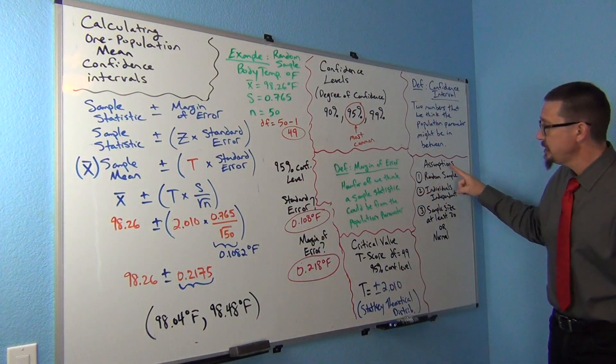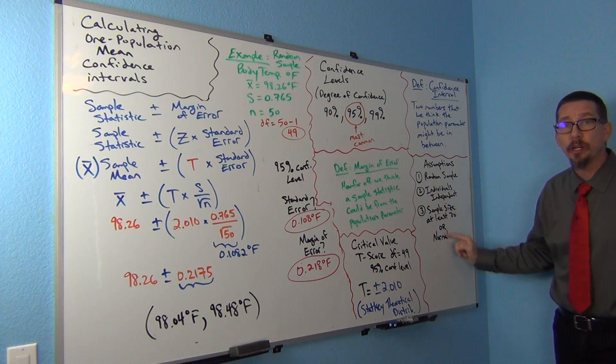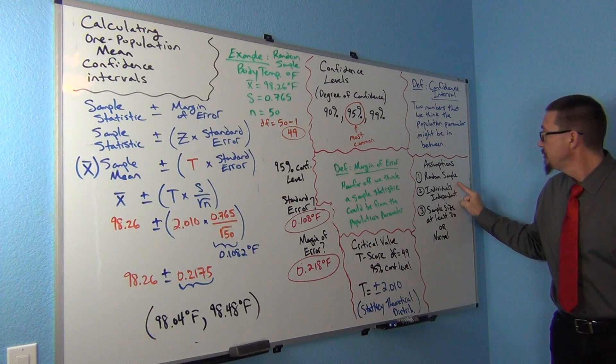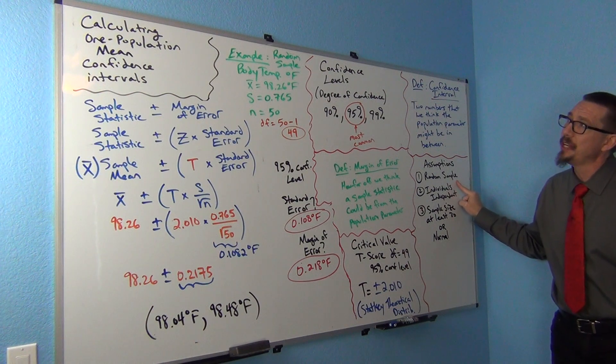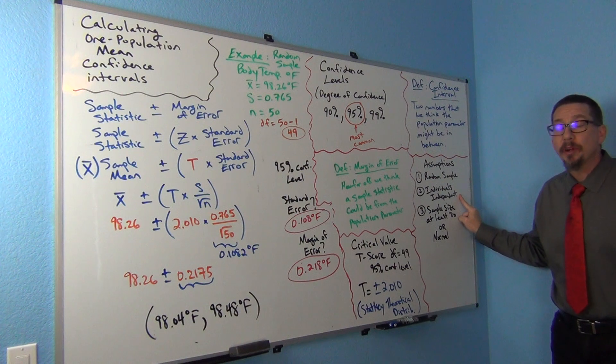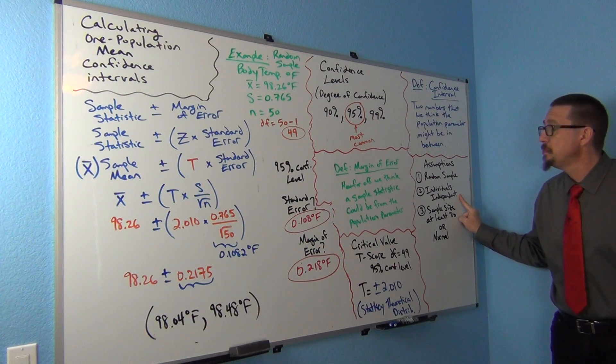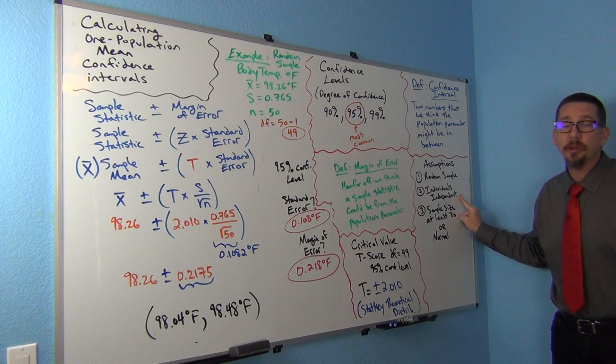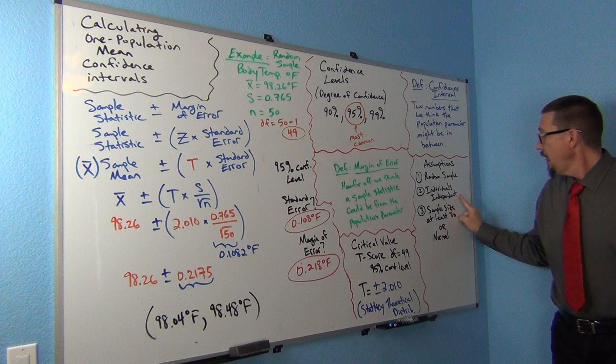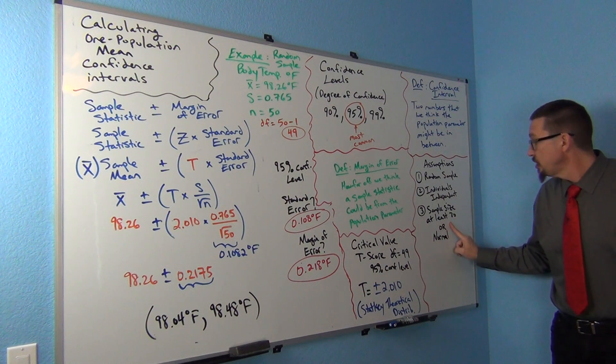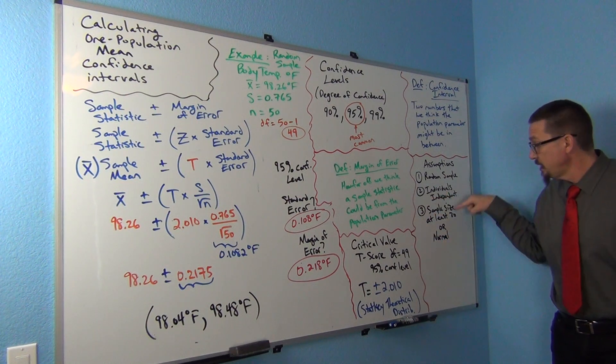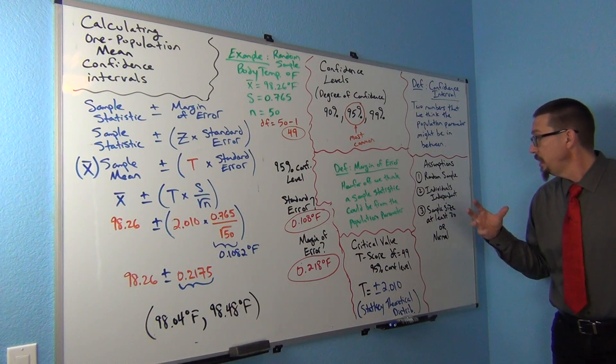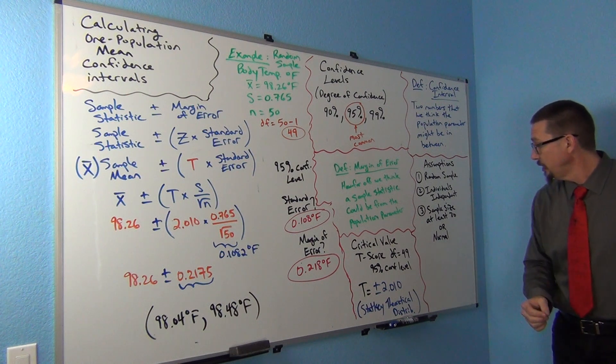If we go over here, we can see the assumptions that are required for this formula to work. We want a random sample. This one was a random sample, I think. I'm going to assume it was a random sample. And then individuals independent, probably this passes that because we have a small random sample of 50 from a lot of people. So chances are that we're not going to have people that are related to each other. Then we need the sample size of at least 30 or normal. Remember, that came from the central limit theorem. That was one of our talks during the central limit theorem of when the sampling distribution would actually look normal and when would it not look normal.